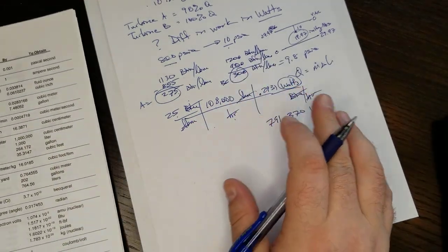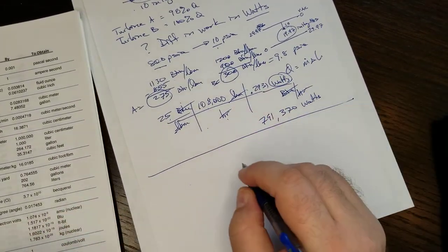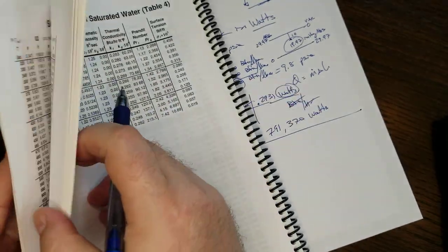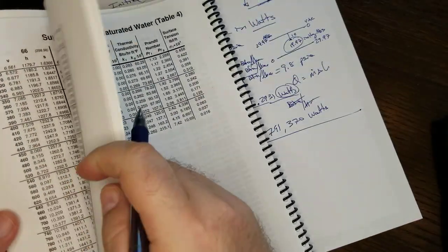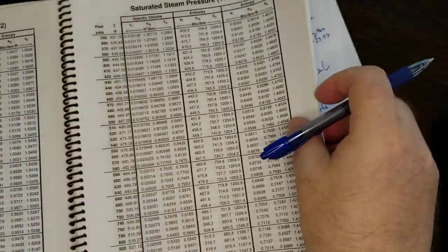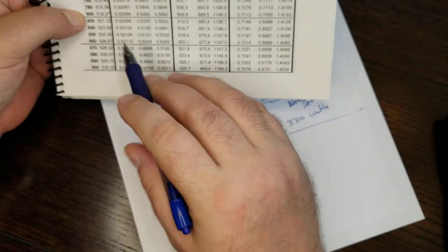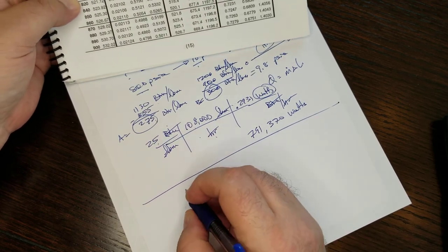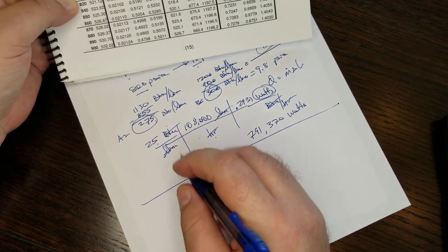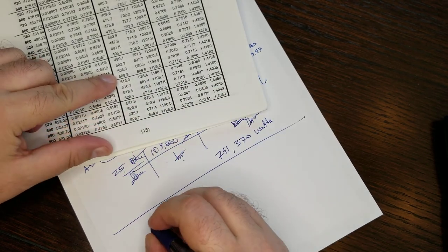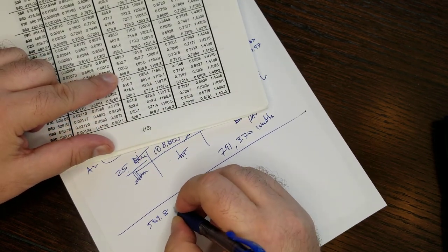All right, that was done using the Mollier diagram. Let's solve that again, actually looking up the enthalpies. So the same turbine. We know that we're starting at 800 PSIA. We're going to want table 2. And we need to find that initial enthalpy.